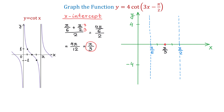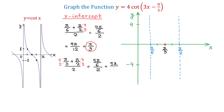To find the x-coordinate of the point to the right, we will add pi over 3 and pi over 2 and divide the result by 2. To get the same denominator, we multiply the first fraction by 2 and the second by 3. Then 2 pi over 6 plus 3 pi over 6 makes 5 pi over 6. So 5 pi over 6 divided by 2 is 5 pi over 12. I will write this on the graph and plot the point with coordinates 5 pi over 12 and negative 4.